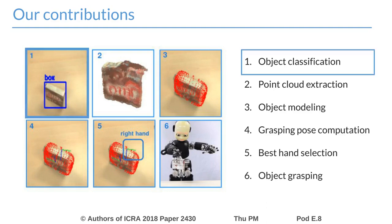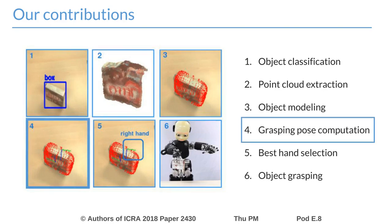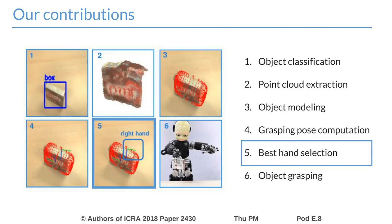An object categorization system provides prior information on the shape of the object. Our modeling approach reconstructs a superquadric representing the object by combining the information provided by vision and the prior on object shape. The estimated model is used by our pose computation method to obtain pose candidates for the right and left hand. The best hand for grasping the object is automatically selected according to a pose quality index.